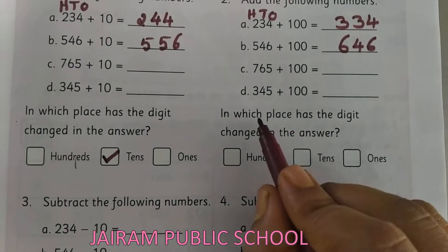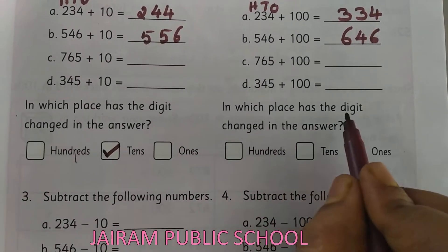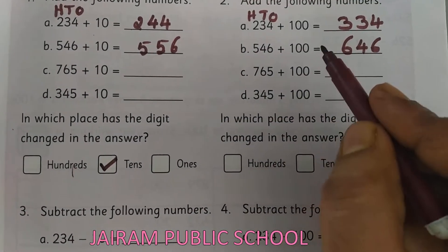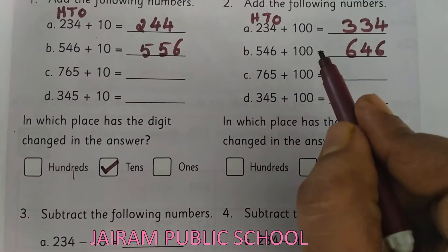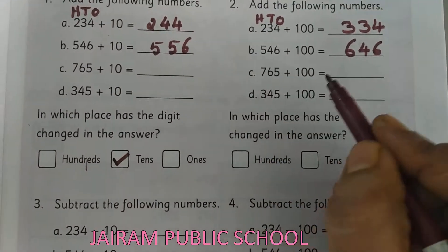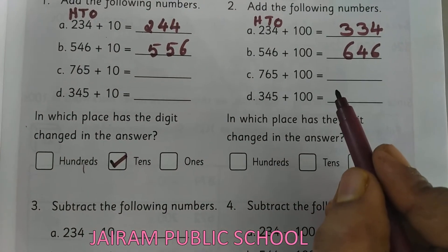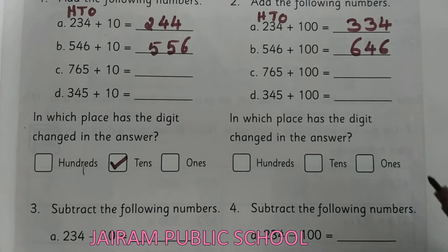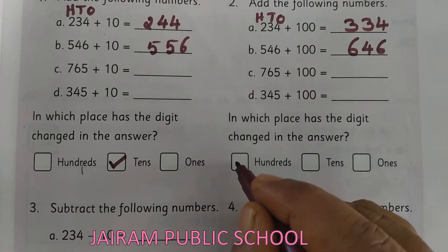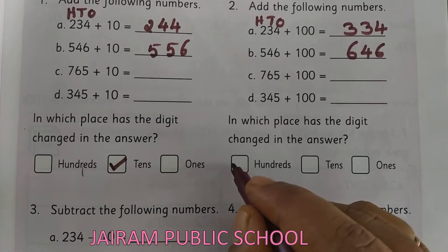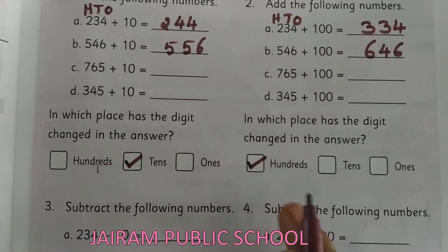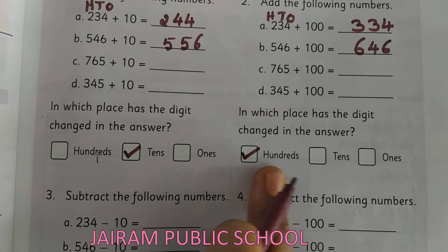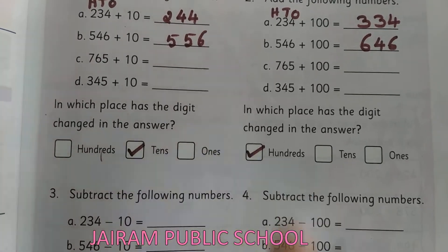Very good, super! Here, in which place has the digit changed in the answer? Here we are adding 100 to that number. So which place is the answer changed? Yes, very good — 100s place. So you have to put the tick option for that 100s place.